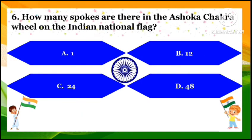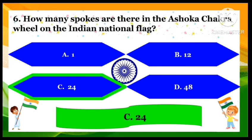How many spokes are there in the Ashoka Chakra wheel on the Indian national flag? The answer is 24.